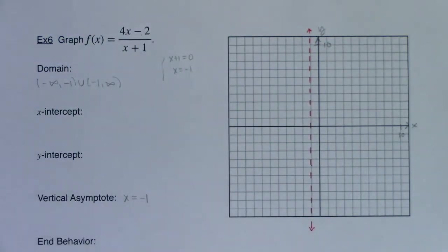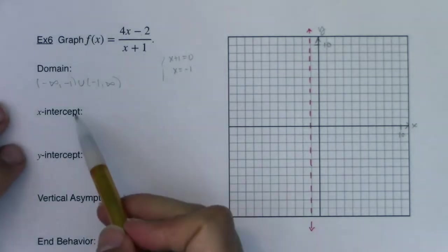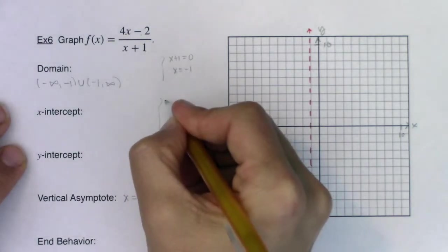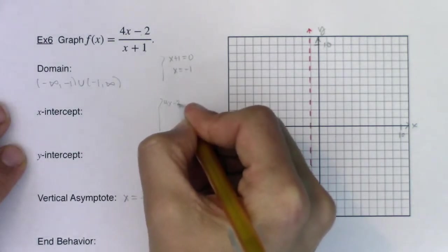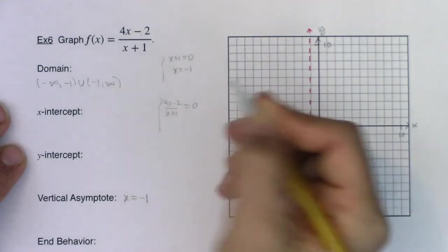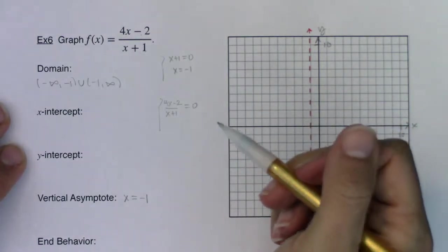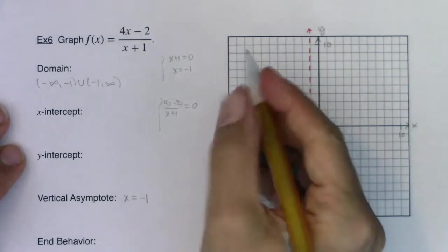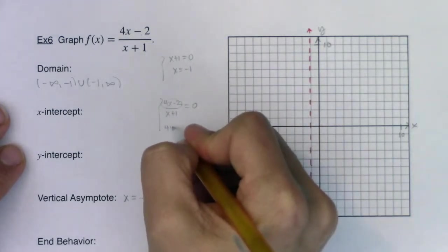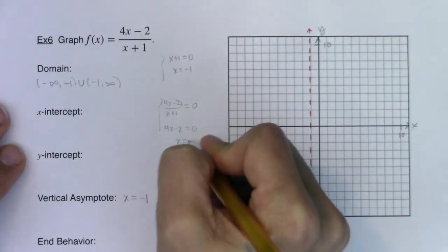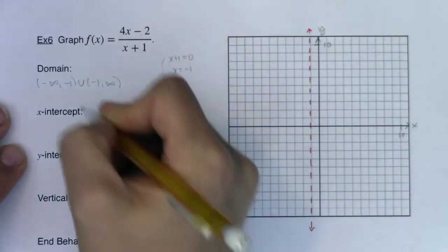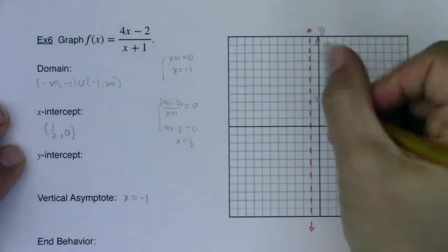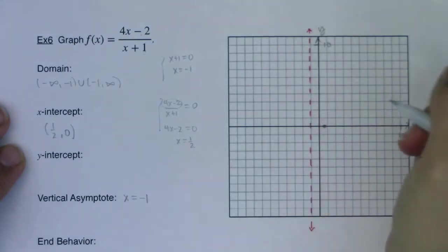Alright, so let's keep on going. For x-intercepts, anytime you want to find the zero of a function, you want to let y equal zero. Well, another way of saying that is when is 4x minus 2 over x plus 1 equal to zero? The only way for a fraction to be zero is if the numerator is zero. It's the only way you'll ever have a fraction be zero. So when is 4x minus 2 equal to zero? Well, that's when x is equal to one half. So I have an x-intercept at one half comma zero. Let me go put that on my graph. Here's my x-intercept.